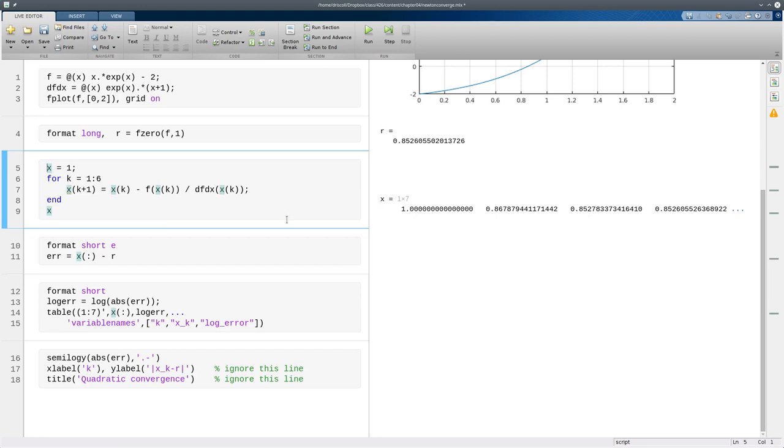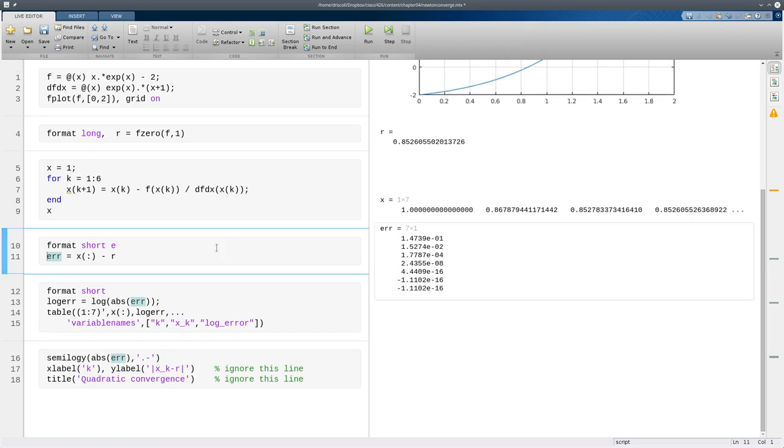In order to see the convergence rate, it's easier to look at the errors. Here you can see how, if you look at the exponents, they're approximately doubling at each iteration. That's a characteristic of quadratic convergence.